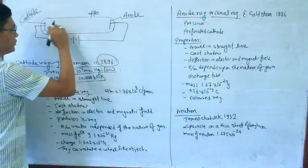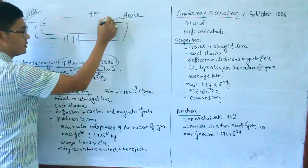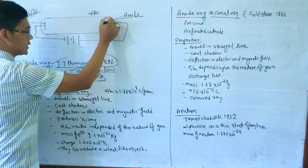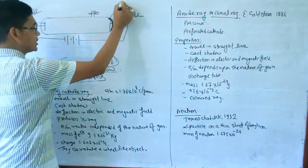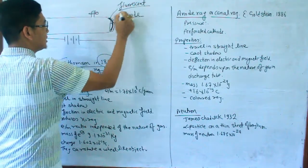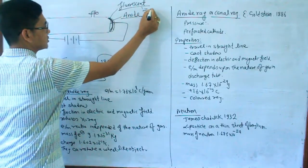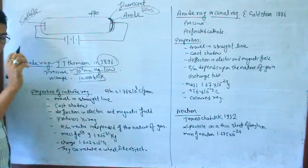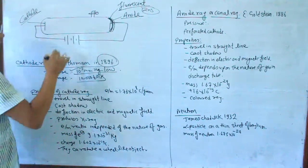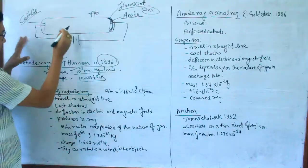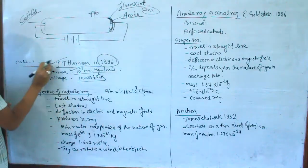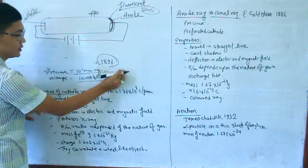Gas is kept inside the tube. The anode end is used to observe fluorescence. Fluorescence is produced using zinc sulfide — it emits light. The fluorescent object at the anode end glows when the cathode ray strikes it.